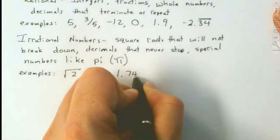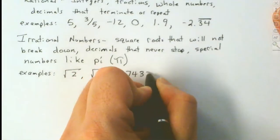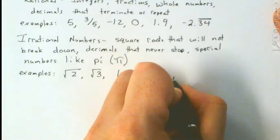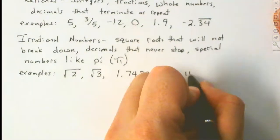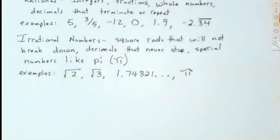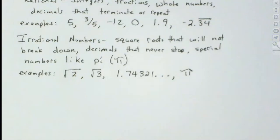How about 1.74321 with a dot dot dot? The dot dot dot means it goes on forever. And then we've got special numbers — the only special number we use in this course is pi. There's others, like Euler's number e, but those are college algebra topics. In this class, we're looking at square roots, decimals that never stop or repeat, and special numbers — in our case, the only special number is pi.